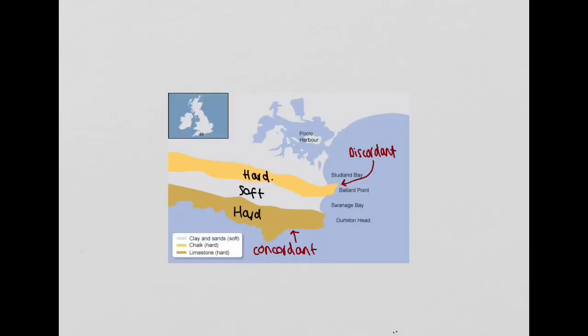This is an example in Dorset, the Poole Harbour and Swanage area of the Jurassic coastline in Dorset, in the south of the UK, as you can see on the map here.